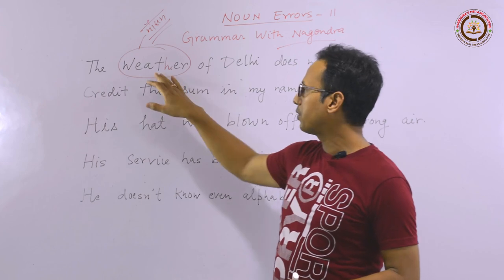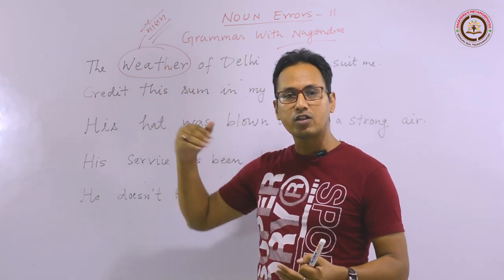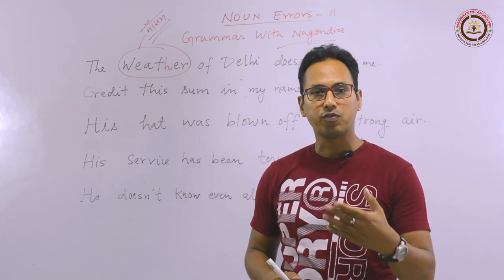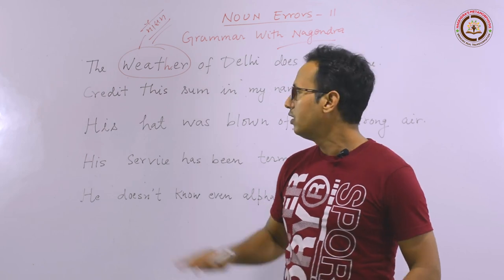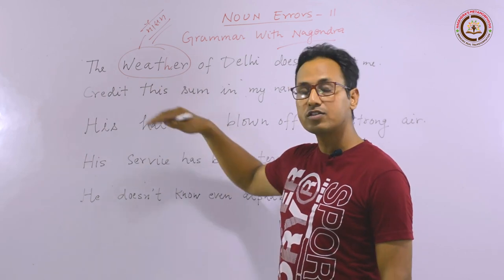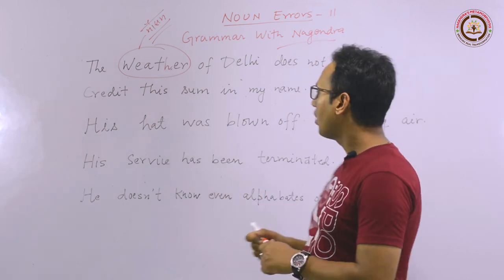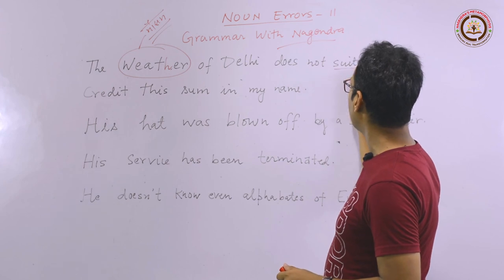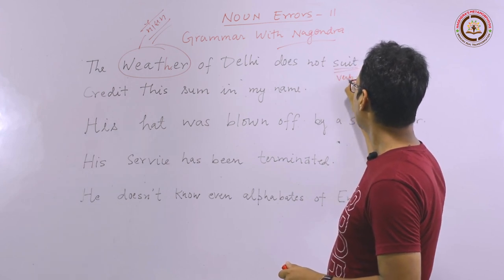For example, if you go to Nainital, you will see that for a while there is sunshine, then it becomes foggy, and then it rains. So weather is something that continuously changes. Now let us look at the other word — the verb 'suit.'